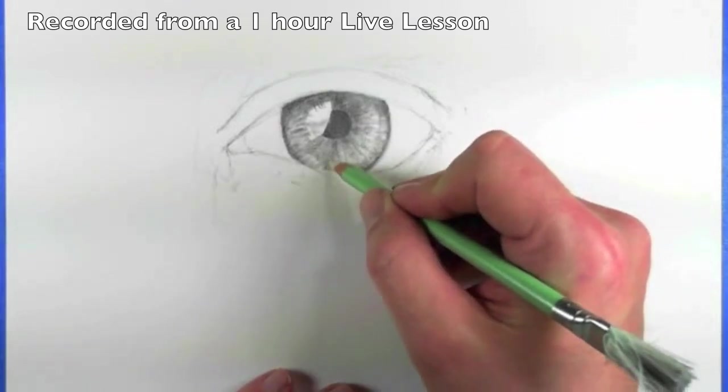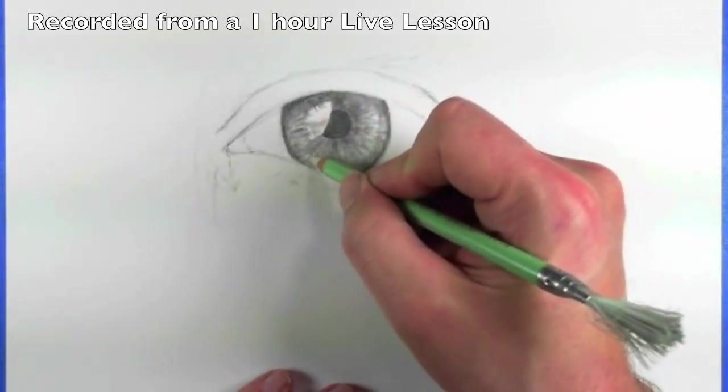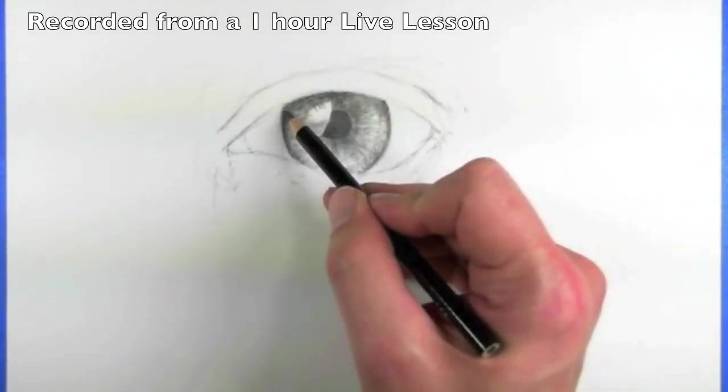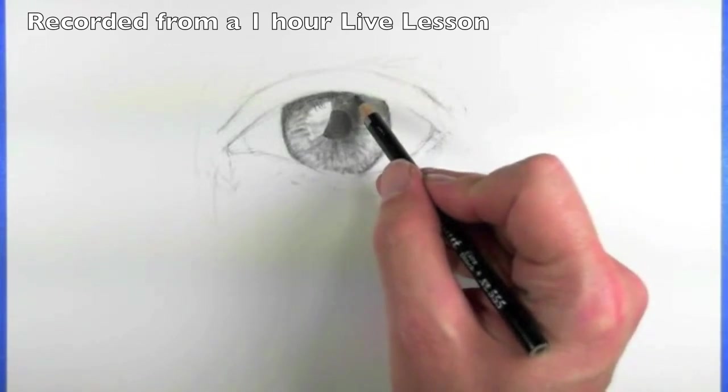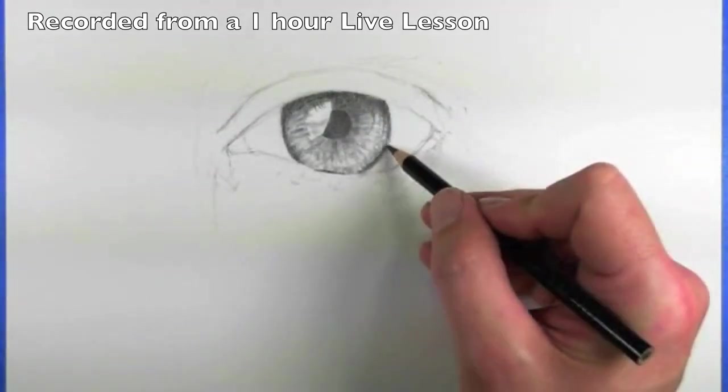I'm going to erase out some of that area that I've already put down in this little white or lighter area, a little bit lighter in value, before I go back and enhance some of the detail. Put a value scale next to your drawing and try to match the values that you see in your photo reference with the values on your value scale.